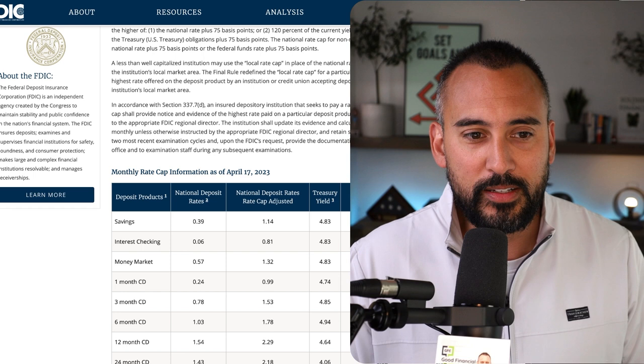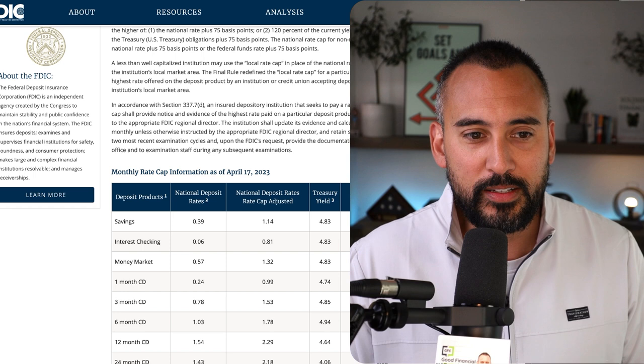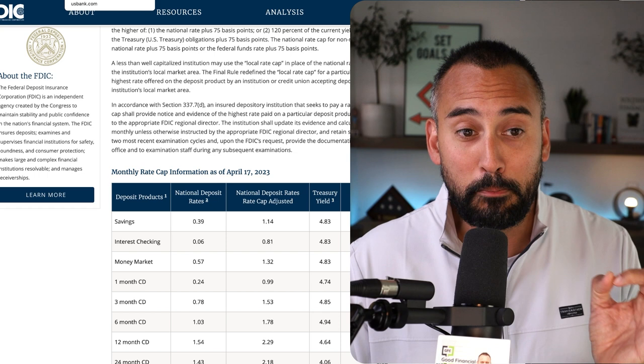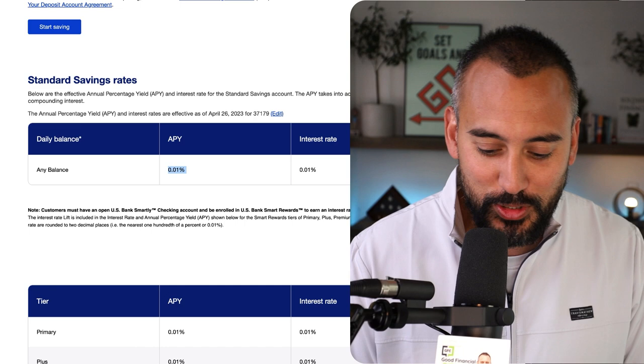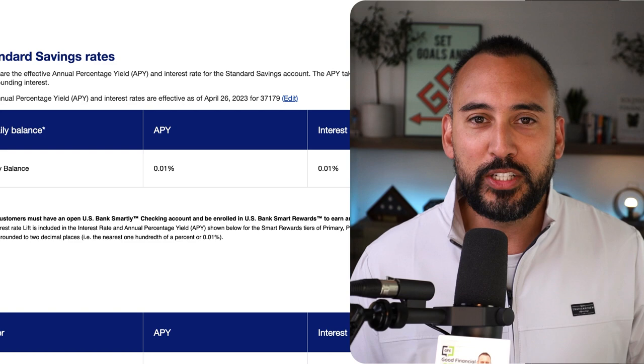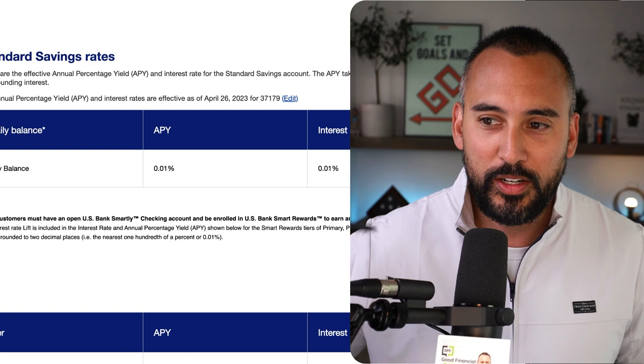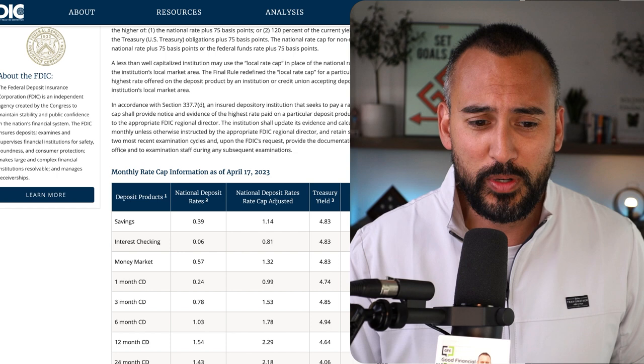Just because interest rates have gone up, don't automatically assume that your bank has increased their rates. So just to kind of give an example, here is looking at the FDIC's website right now. And you can see where right now it says, the national deposit rate is 0.39%. And that's not really that exciting, right? But if you, and just to give you an example, so here is actually my bank. Any balance APY, 0.01%.